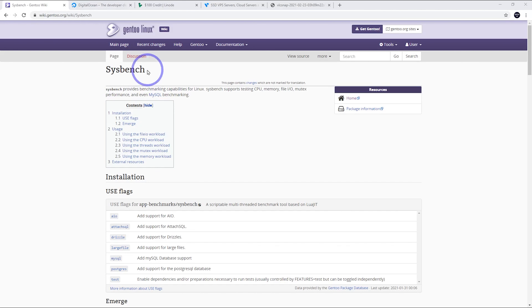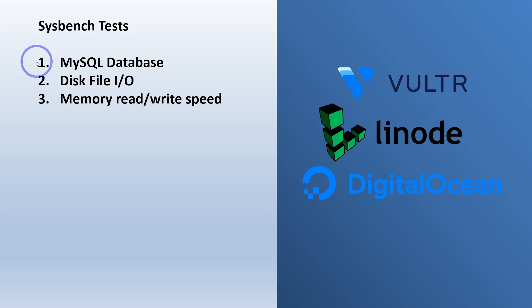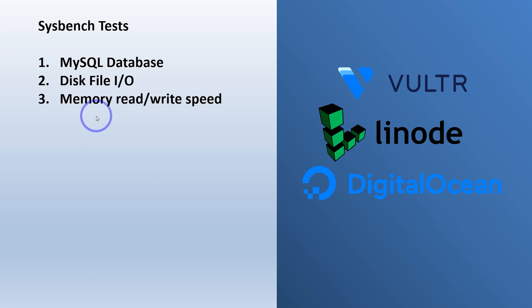For our benchmarks today, I'm going to be running Sysbench. This is a very popular way of benchmarking a Linux server and it's especially handy for benchmarking MySQL databases, which is a very important aspect of running a WordPress website. The three tests we're going to run are: a MySQL database test — really important for WordPress's dynamic content and most importantly WooCommerce cart and checkout flow, as these are usually bottlenecked by database performance — plus disk file input/output and memory read and write speed, which are important for serving cached pages to your visitors as quickly as possible. Let's start off with the most important test, the MySQL database test.